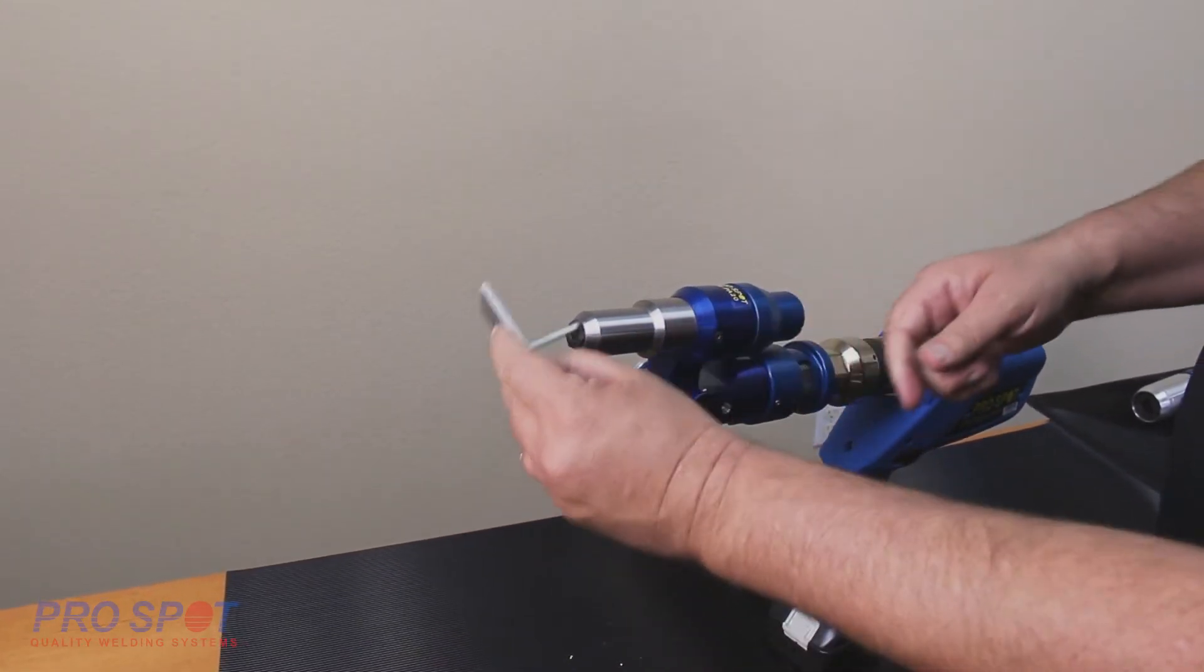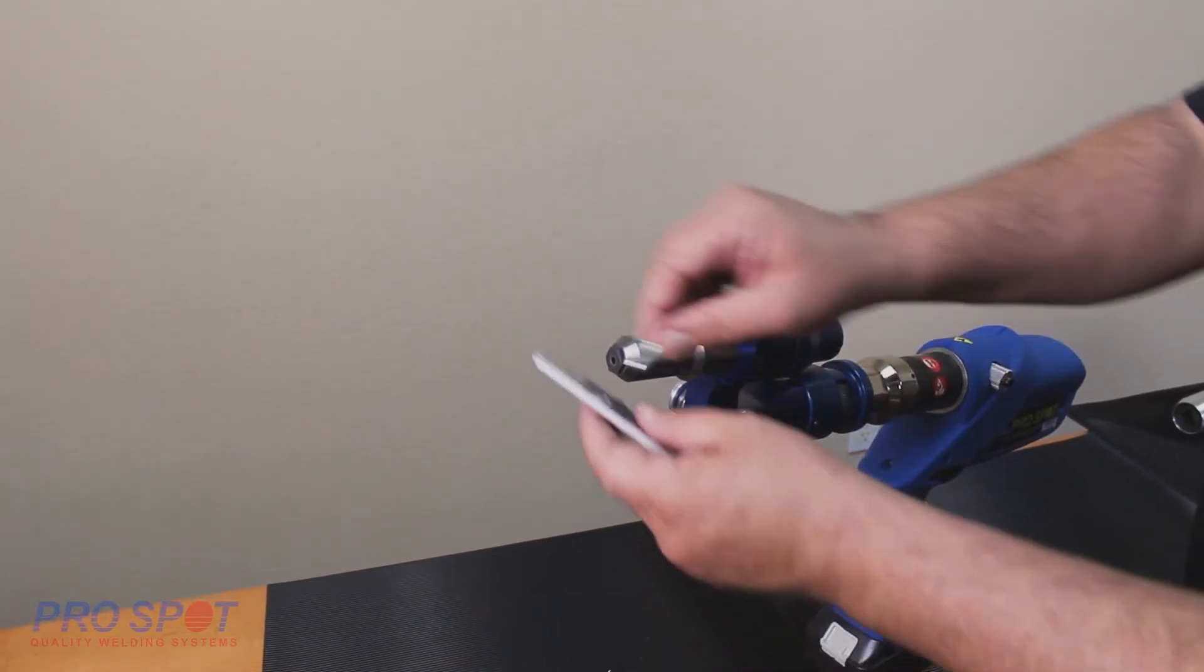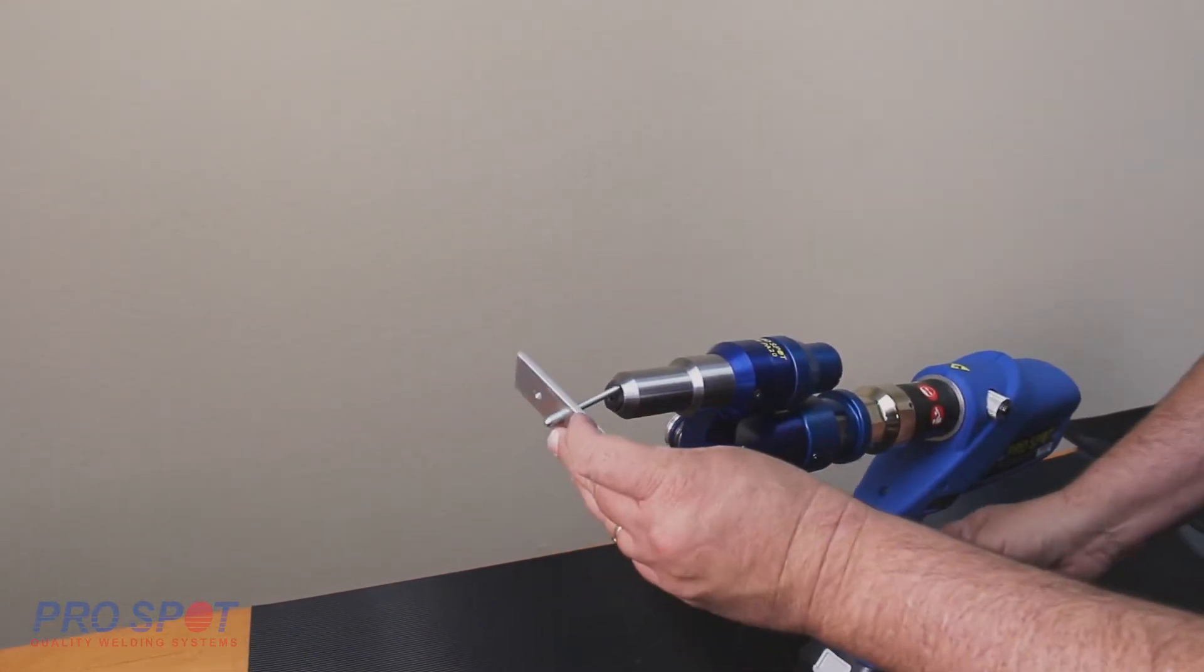You can either load the blind rivet into the material, then insert it into the blind rivet adapter, or start by inserting the blind rivet directly into the blind rivet adapter first.